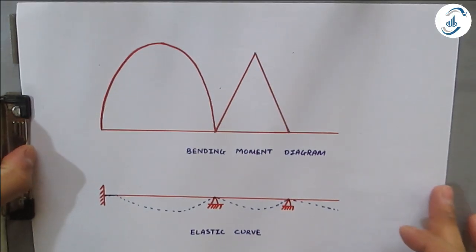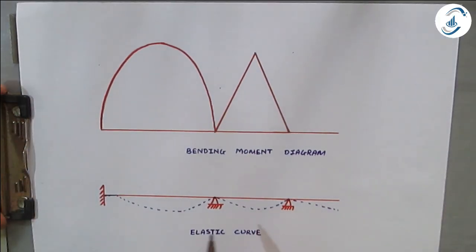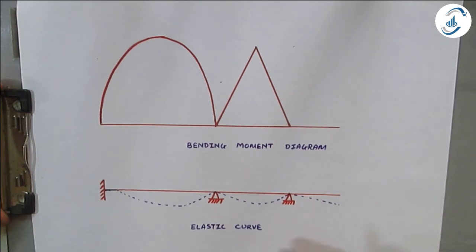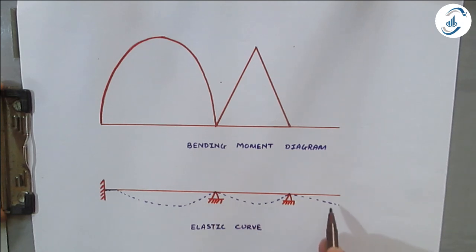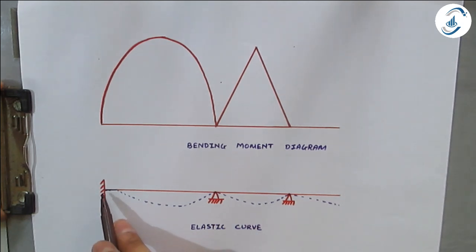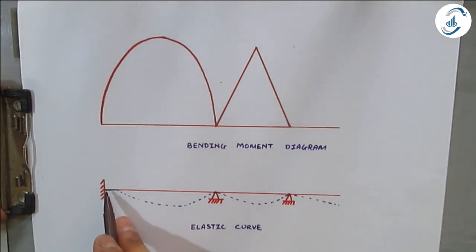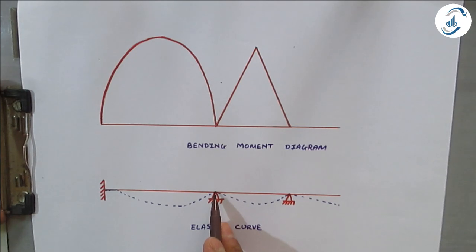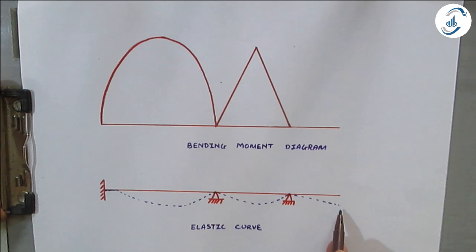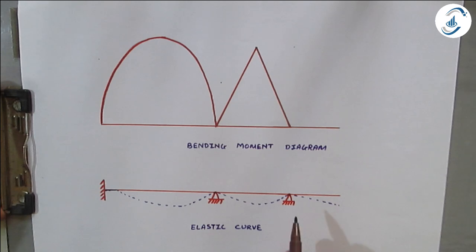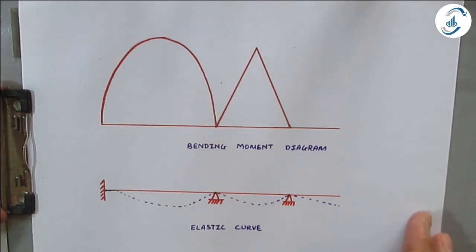After finding final moments, we draw the elastic curve and the bending moment diagram. The elastic curve shows the deflected shape: fixed end at A with no deflection, then a dotted line passing through the hinges at B and C, with deflection due to the point load at the overhang end D.